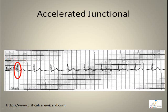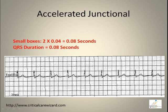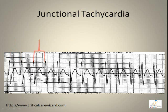Accelerated junctional rhythm also features a missing P wave. Junctional tachycardia features a regular rhythm with a rate of more than 100 beats per minute and a missing P wave.